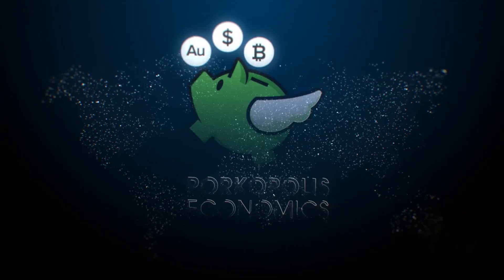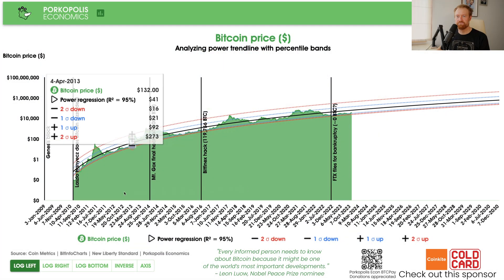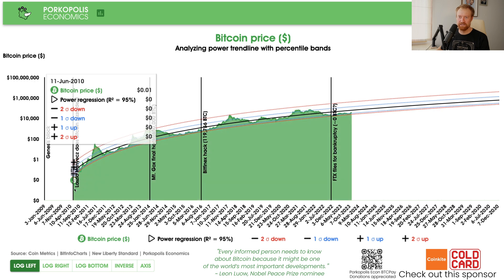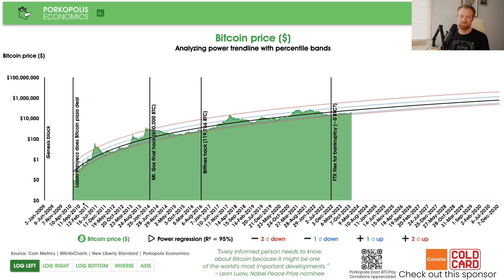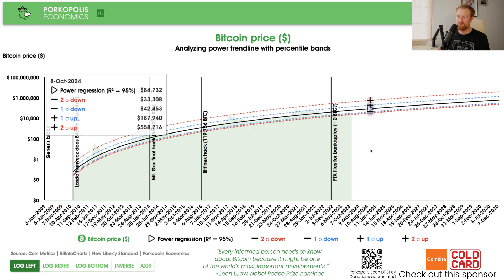Hey everybody, welcome. Today we're going to go back to the good old all-time power law trendline of the Bitcoin price. So here we are again with the good old Bitcoin price, all-time price history starting on May 22nd — I'm roughly picking May 22nd, 2010, Bitcoin Pizza Day, where Laszlo, our friend, made the first recognized Bitcoin barter transaction: 10,000 Bitcoins for two pizzas.